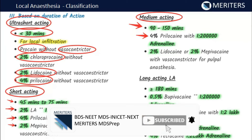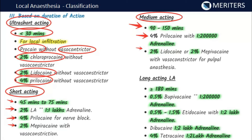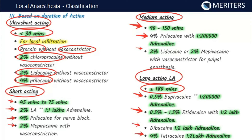Medium-acting agents also include 2% lignocaine or 2% mepivacaine with vasoconstrictor for pulpal anesthesia. Long-acting local anesthetics have a duration of more than 180 minutes. Examples include 0.5% bupivacaine with 1:200,000 adrenaline, 0.5–1.5% etidocaine with 1:200,000 adrenaline, dibucaine, and 4% tetracaine with 1:200,000 adrenaline.